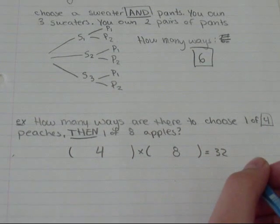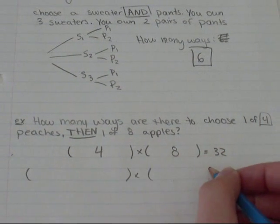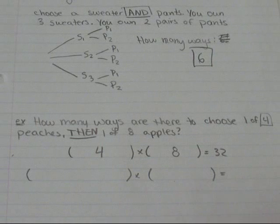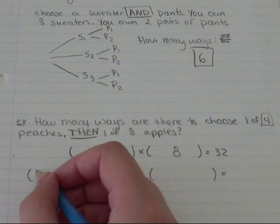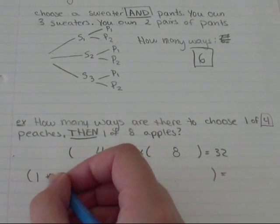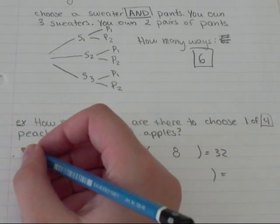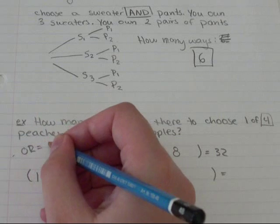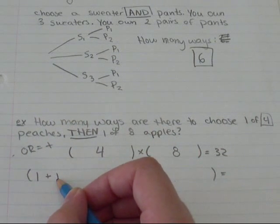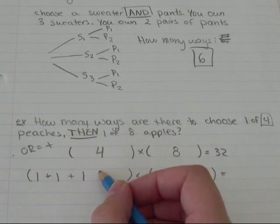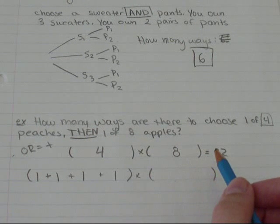There's two other ways you can think about this. You can think about this as, I'm going to choose apple one or, 'or' means multiply, not multiply. 'And' means multiply, 'then' means multiply, 'or' means add. So I can choose apple one or apple two, or I can pick a different apple, or I can pick a different apple. And then the same thing, oh, I guess that was peaches.